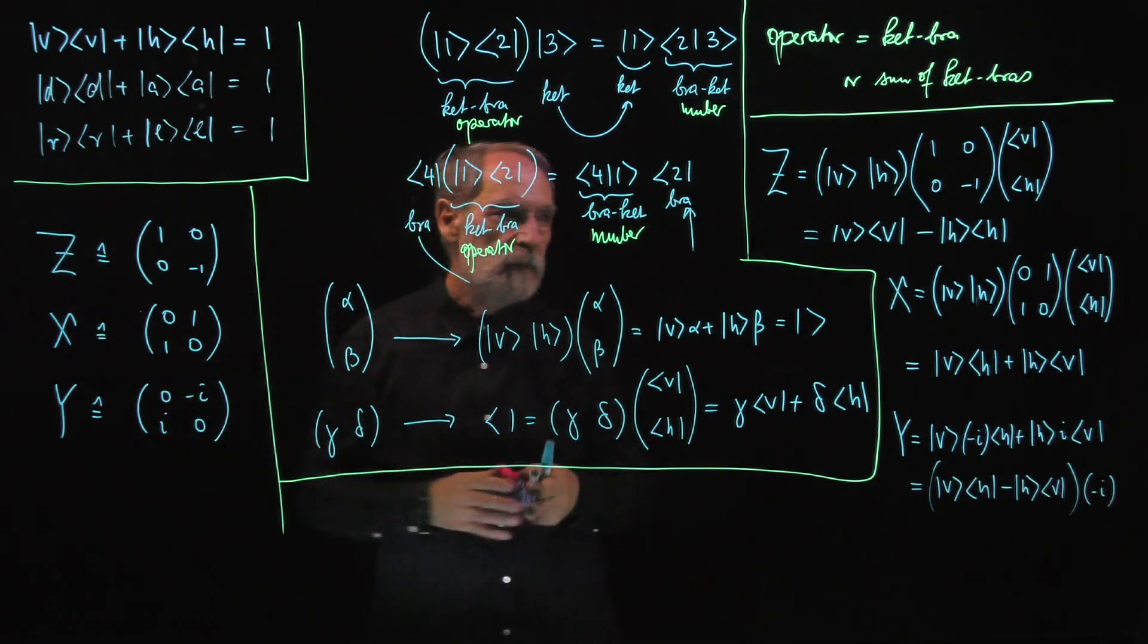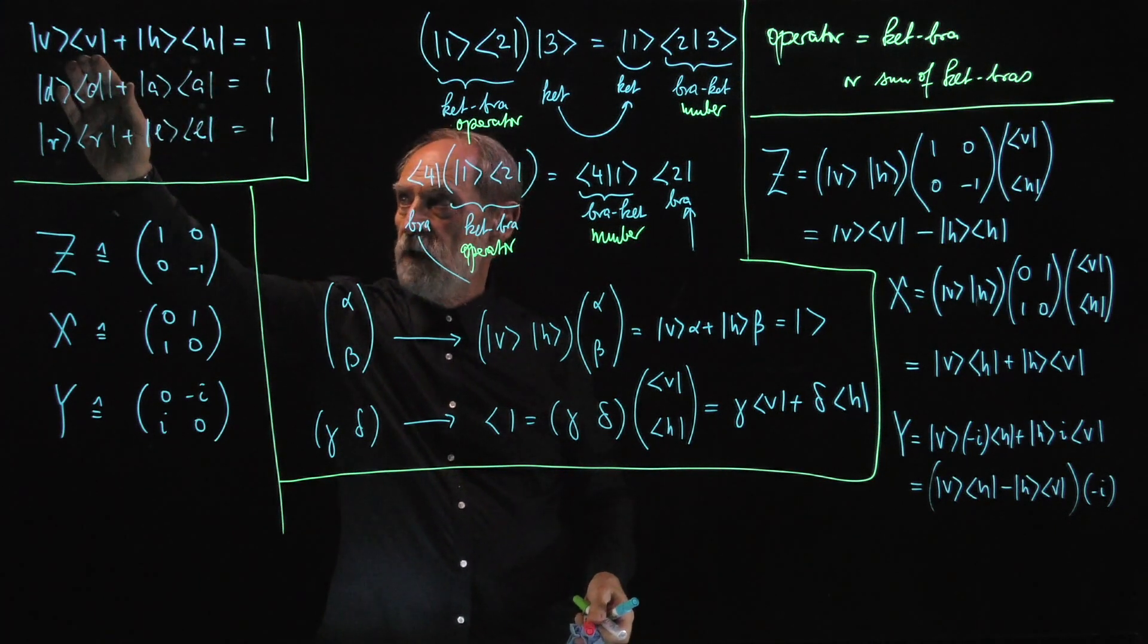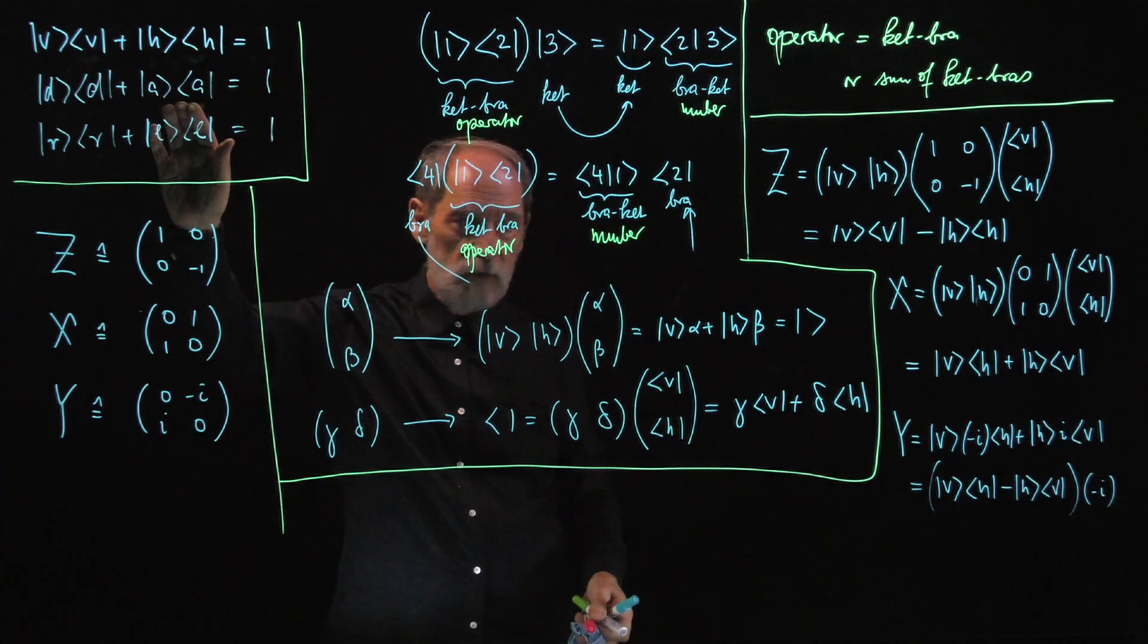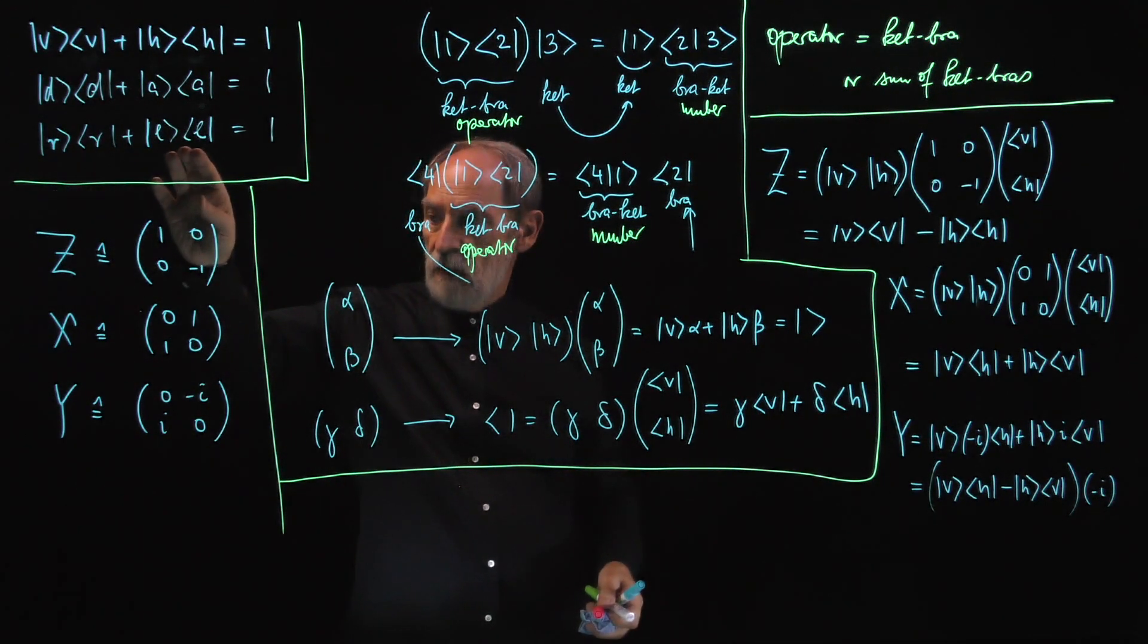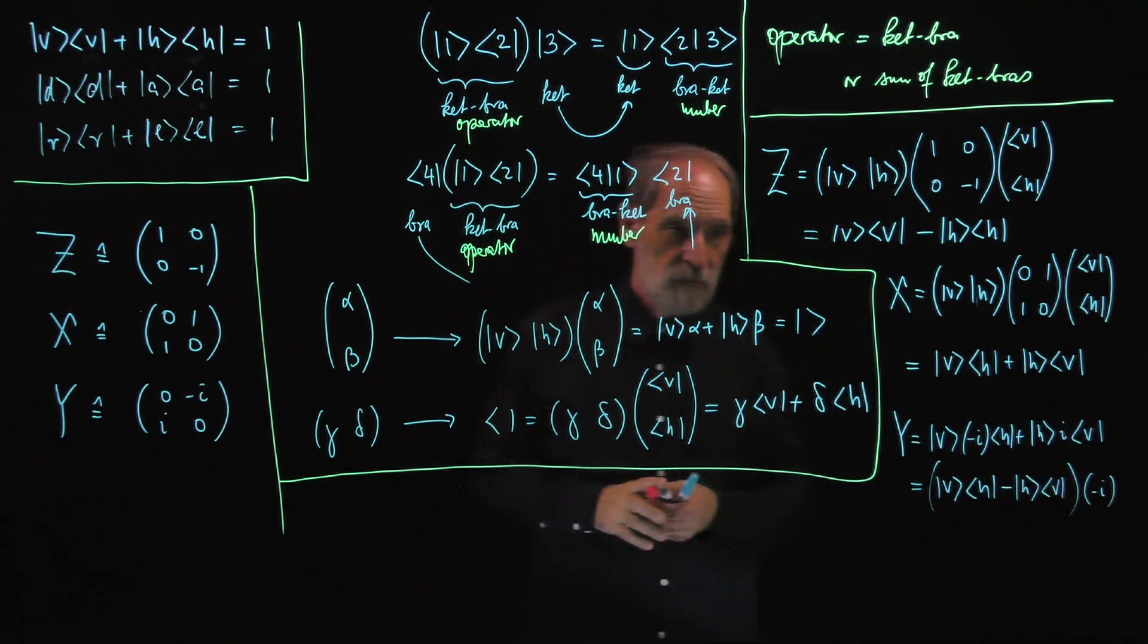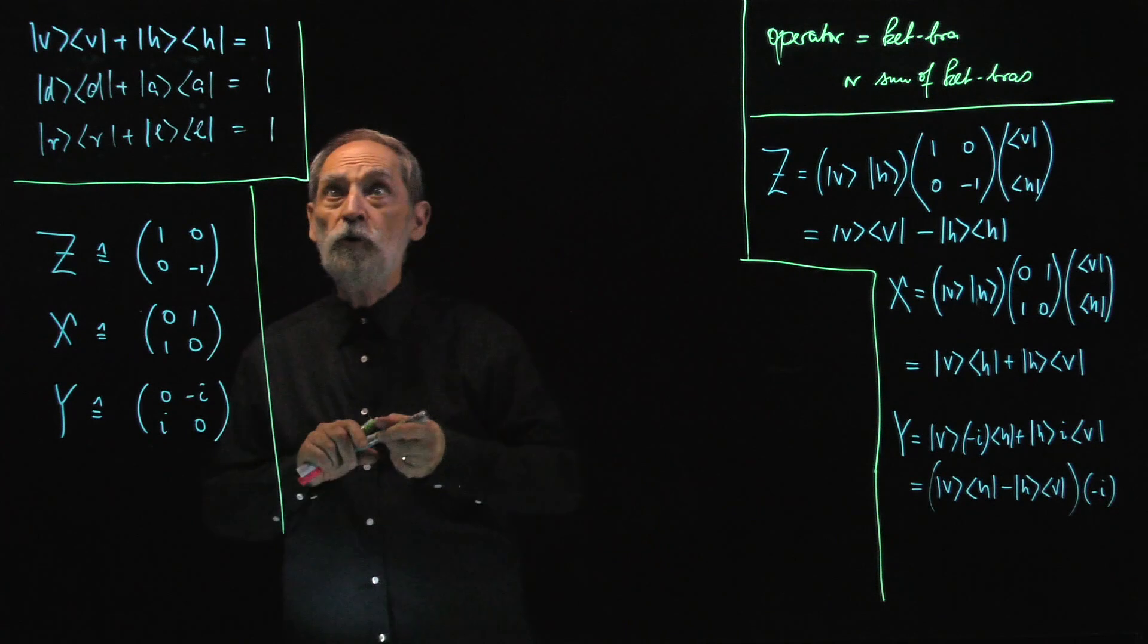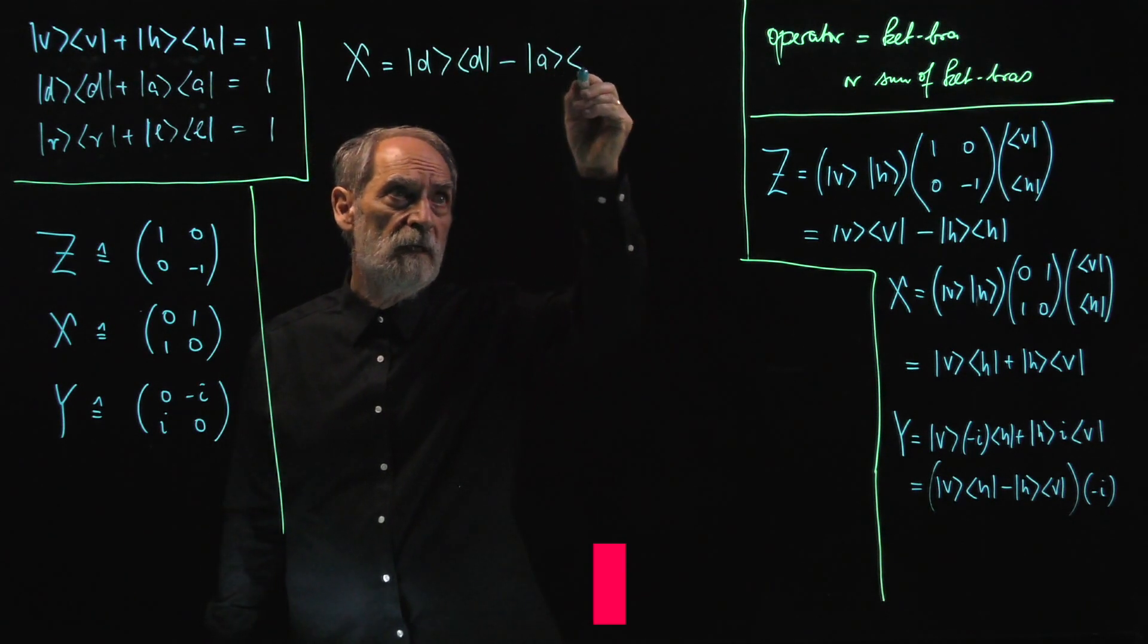So these properties refer to the V, H alternative, where we were assigning value plus one to V, and value minus one to H. You can see this here. This goes with plus one, this one goes with minus one. And here, for X, we were assigning plus one to D, and minus one to A. That's not so obvious, right? And for Y, we were assigning plus one to right-handed circular polarization, and minus one to left-handed circular polarization. Again, we cannot see that easily.